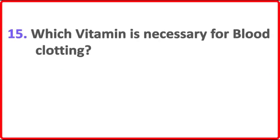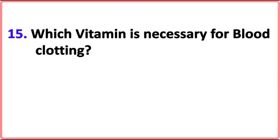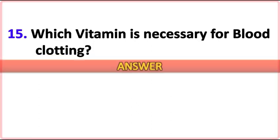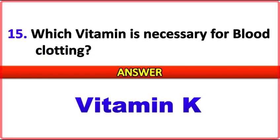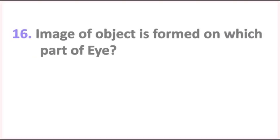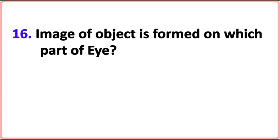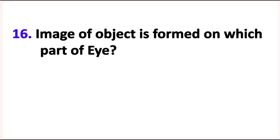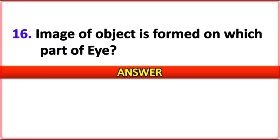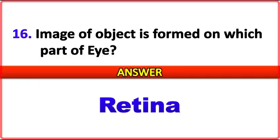Which vitamin is necessary for blood clotting? Answer: Vitamin K. Image of an object is formed on which part of the eye? Answer: Retina.